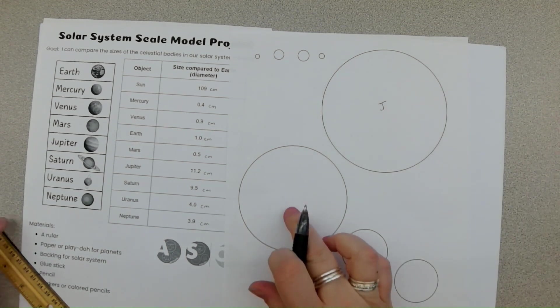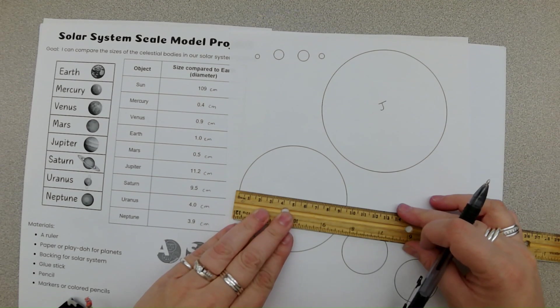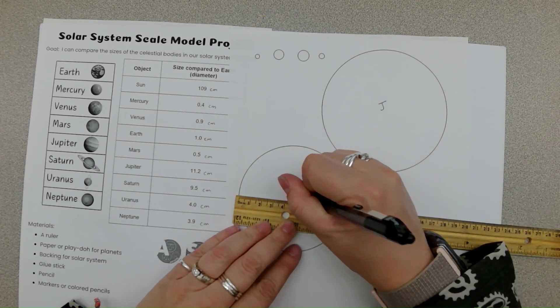So this is going to be our Jupiter. Which probably leaves this to be Saturn. I can take my ruler and I'm going to measure. And I have 9.5. Perfect. So this is going to be Saturn.